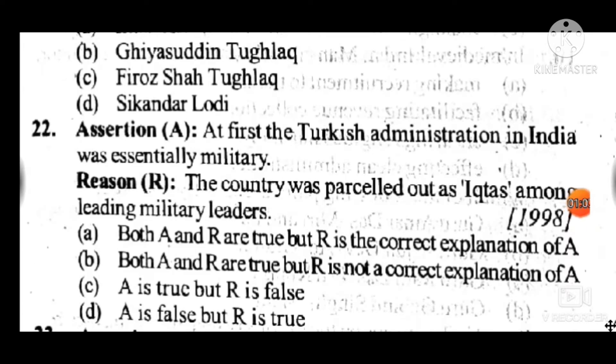Question 22 assertion: The Turkish administration in India was essentially military in nature; the country was parceled out among leading military leaders. Answer to question 22 is A: both A and R are true and R is the correct explanation of A.